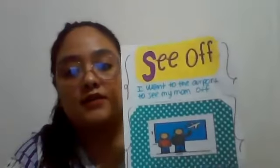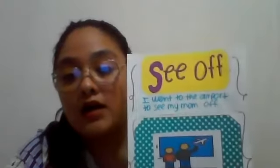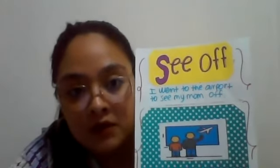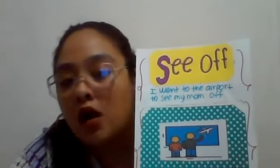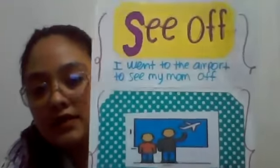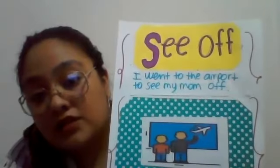The next flashcard is 'see off,' which means to watch someone leave on a trip. For example: 'I went to the airport to see my mom off.' With see off, you can place a pronoun or name in the middle — for example, 'to see Michael off' or 'to see Elsa off.' The image shows people saying goodbye and seeing someone off.